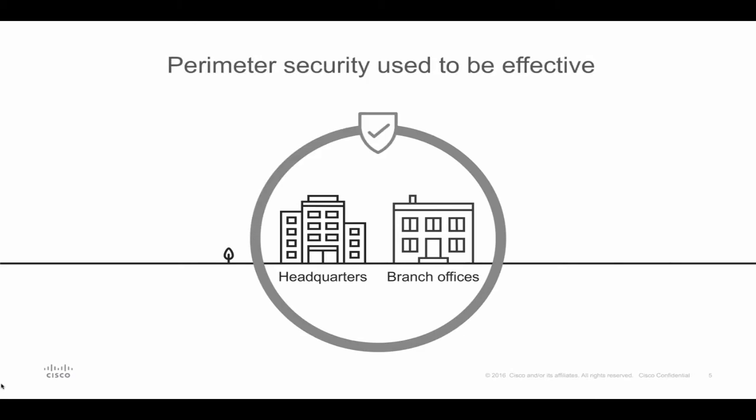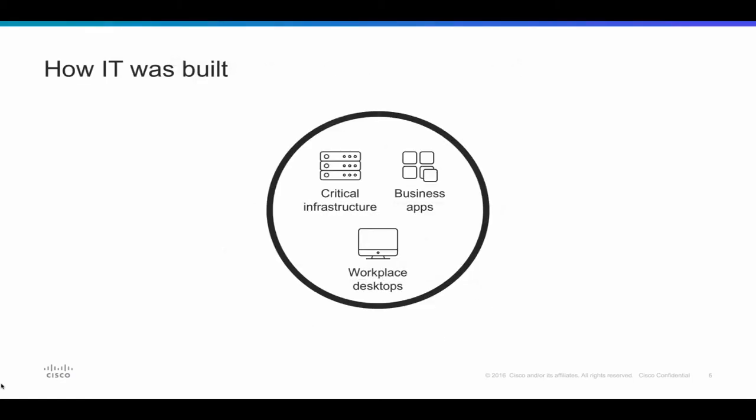You would protect your headquarters, you would have your security stack there, you would have your branch offices backhaul traffic and still get that protection. That's really how IT was built, where your critical infrastructure, your business apps, your data, and your desktops were all housed inside headquarters and protected by the perimeter and the security that you had there.